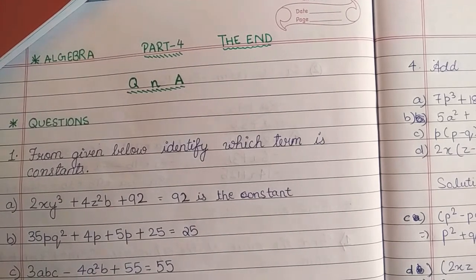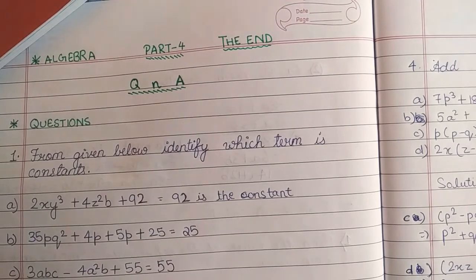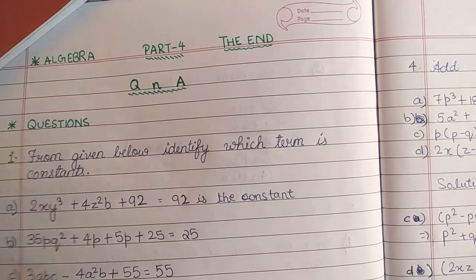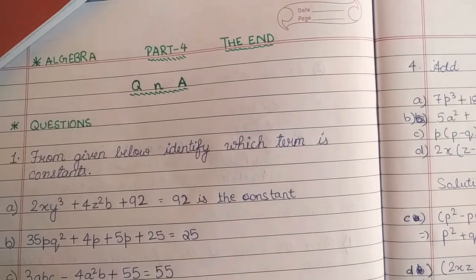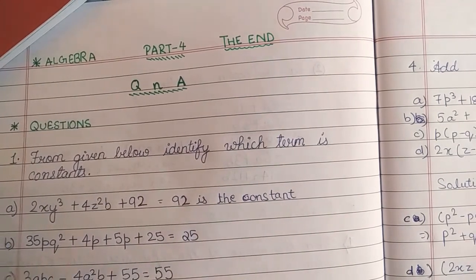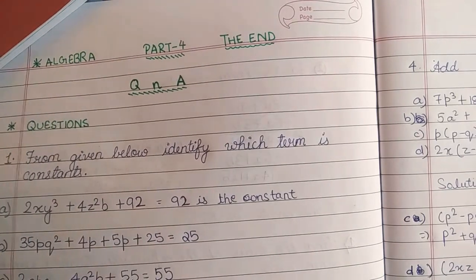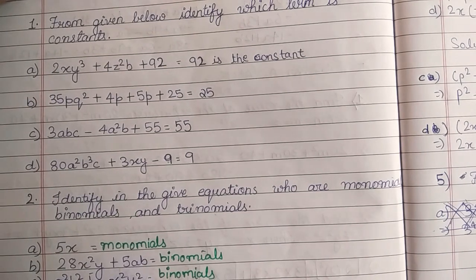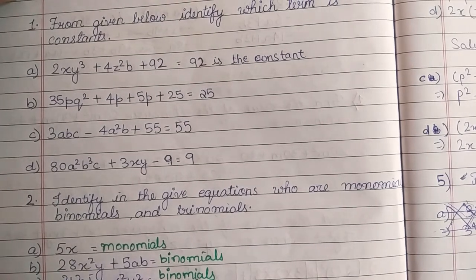From given below, identify which term is constant. a) 2xy³ + 4z²b + 92. Here 92 is the constant, as in the earlier video I have taught this. b) 35pq² + 4p + 5p + 25. So the constant is 25. c) 3abc - 4a²b + 55. Answer is 55. d) 80a²b³c + 3xy - 9. Answer is 9.